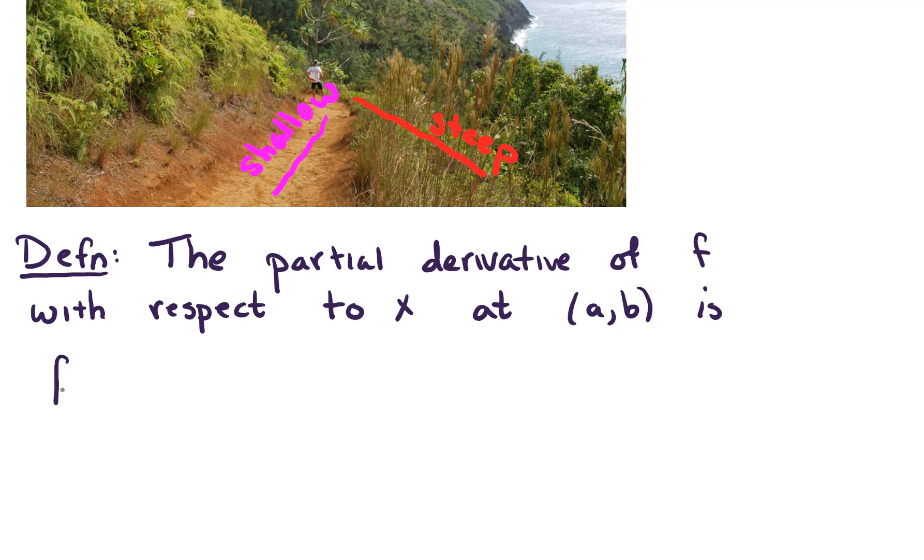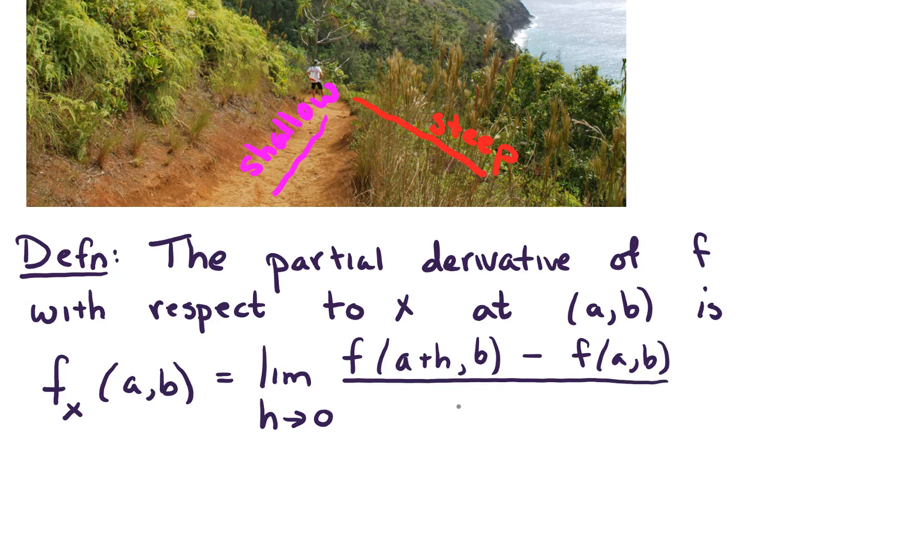We write f with a subscript x of (a,b), this is just the limit as h goes to 0, f of (a+h, b) minus f of (a,b) all over h.